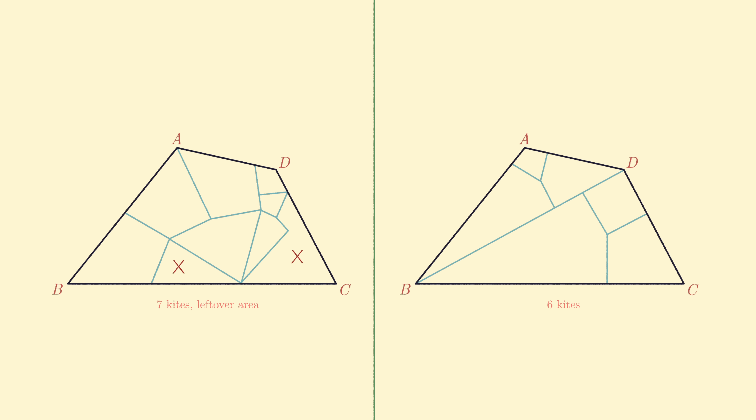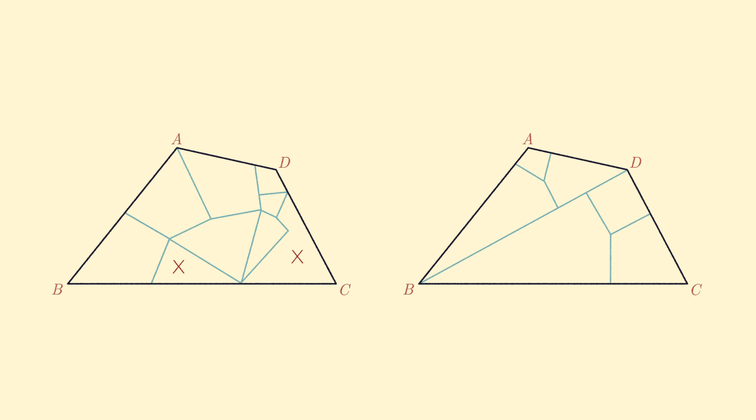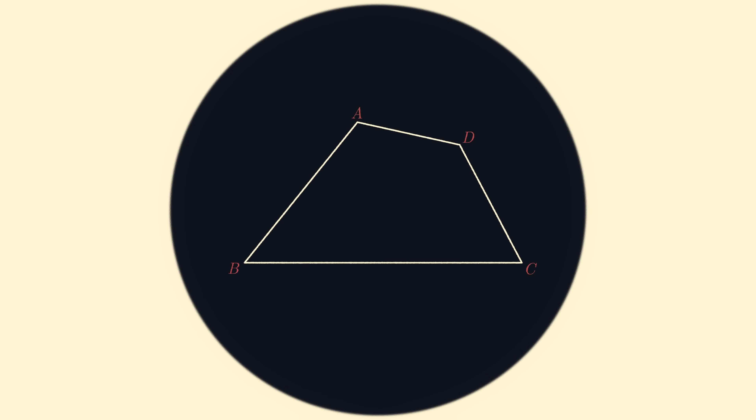Also, looking back at the problem, why seven? There must be some specific reason as to why seven is precisely the number chosen. What we really want is some general approach to dissect any convex quadrilateral into seven kites.